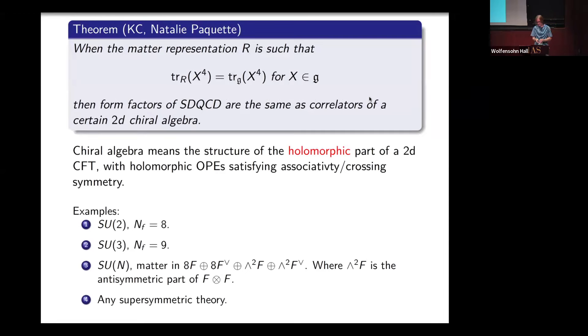The main result of this talk is that when the matter content satisfies this identity—trace of X to the fourth in the matter representation equals trace of X to the fourth in the adjoint representation—then these form factors are the same as correlators of a 2D chiral algebra. By chiral algebra, I mean we take a familiar 2D CFT and look at the structure of the holomorphic part. A particular consequence of this is that when this holds, these form factors are all rational functions of the kinematics.